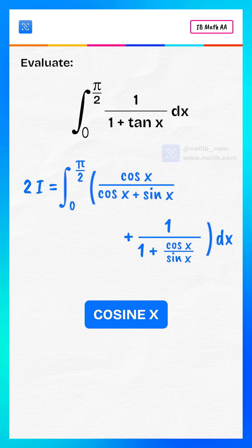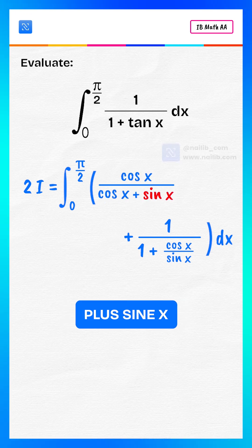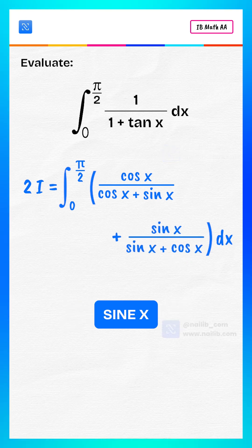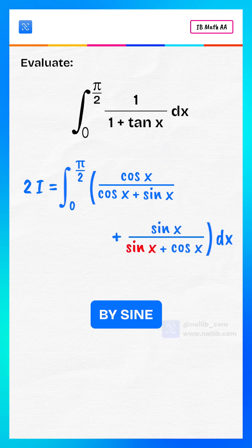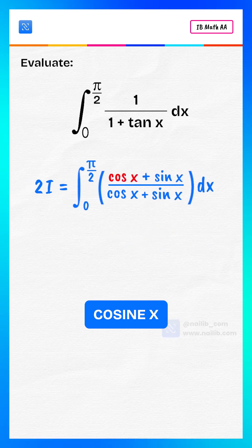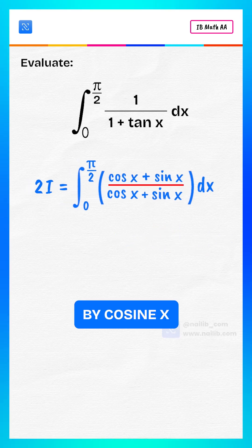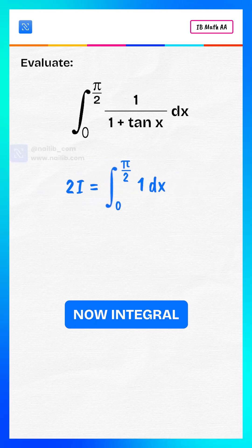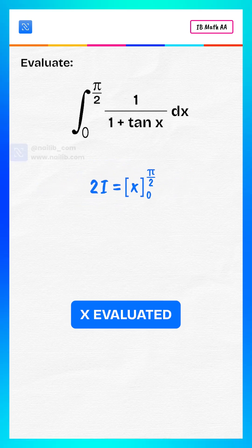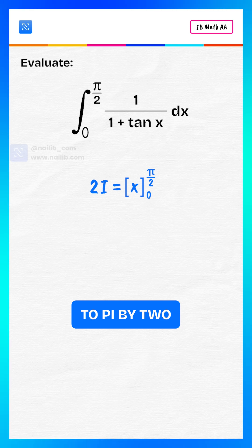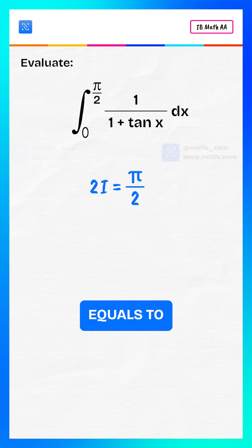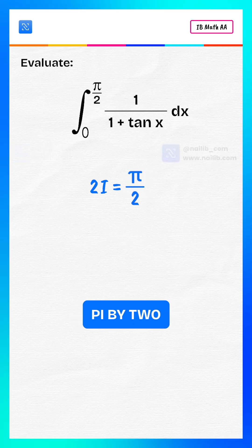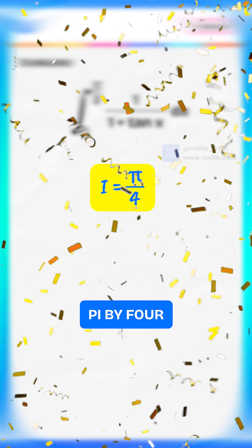The first term becomes cosine x divided by cosine x plus sine x. The second term becomes sine x divided by sine x plus cosine x. So cosine x plus sine x divided by cosine x plus sine x equals one. The integral becomes x evaluated from zero to pi by two, giving two i equals pi by two, so i equals pi by four.